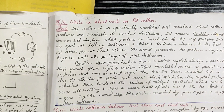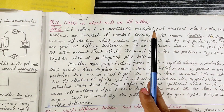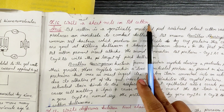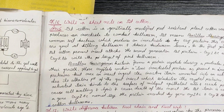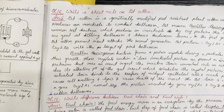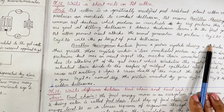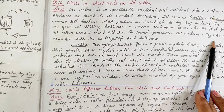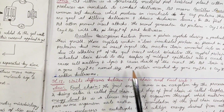Write a short note on Bt cotton. Bt cotton is a GMO plant derived from Bacillus thuringiensis. The genes introduced are cry 1-Ac and cry 2-Ab.